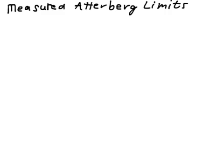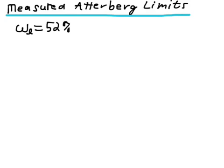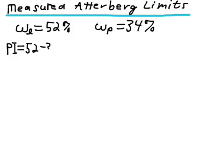So, let's check the Atterberg limits. Now, we know from the problem statement that the Atterberg limits measured on the fine portion of the sample gave us a liquid limit of 52% and a plastic limit of 34%. We're going to need to calculate the plasticity index from these. We know that the plasticity index is the difference between the liquid limit and the plastic limit, or 52 minus 34, which is equal to 18.